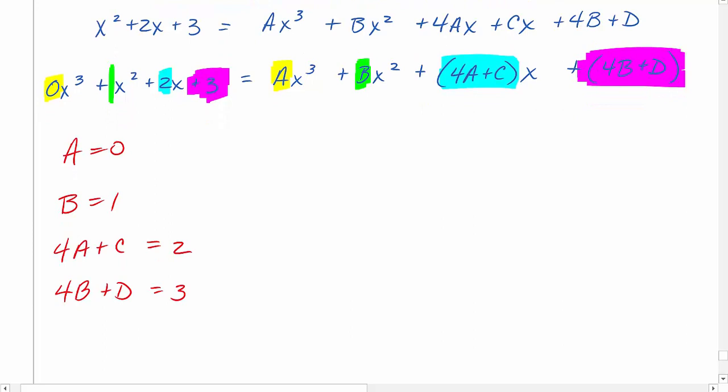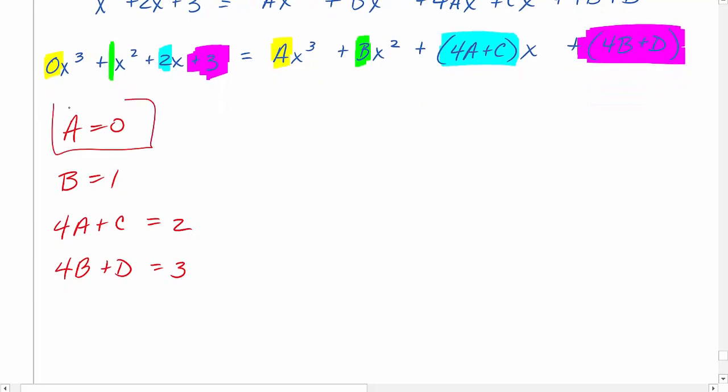Well, this is nice. Our first two are already solved for us. I'm going to take that a equals 0 and plug it into our third equation. And that's going to give us that c is equal to 2. And then lastly, we just need to solve for d. So let's plug in 1 for b and solve for d. It's going to give us d equals negative 1.